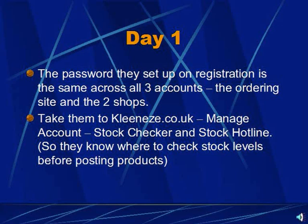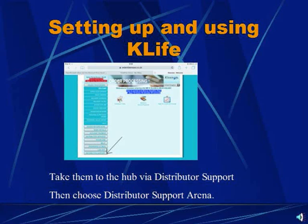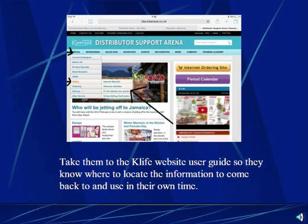Once they know how to check the stock, you now want to help them set up their K-Life user guide. So you take them via the distributor support button back to the hub and then on to the distributor support arena. We're going to show them where they need to find the guide so that they can set up their K-Life shop and know how to share the iCat. You take them from the distributor support arena — top left is retail, then online, and then K-Life website user guides.